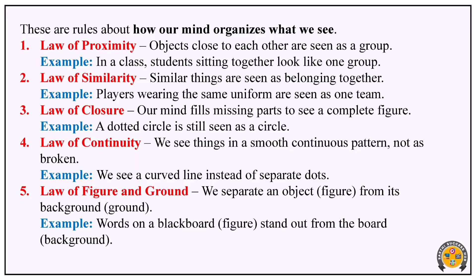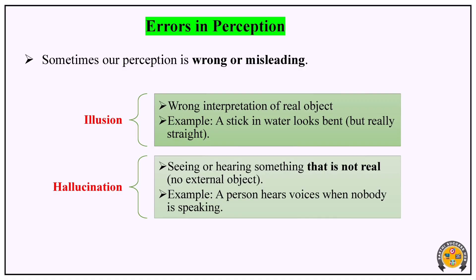To summarize: proximity is seeing close objects as a group; similarity is treating similar objects as a group; closure is seeing missing parts as a complete figure; continuity is smooth and continuous, not broken; and figure and ground is separating the figure from the object's background. Next, Errors in Perception. Sometimes our perception is wrong or misleading — we analyze the information incorrectly. This gives us illusion and hallucination.